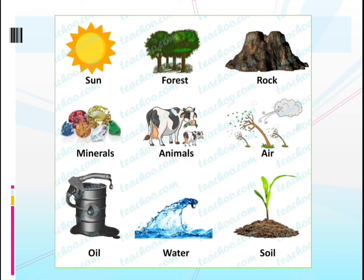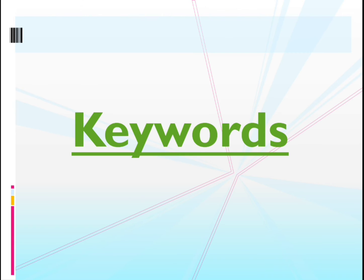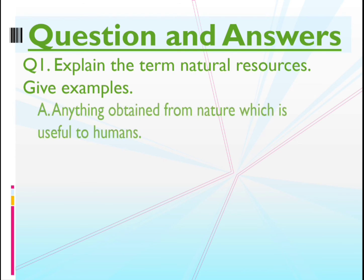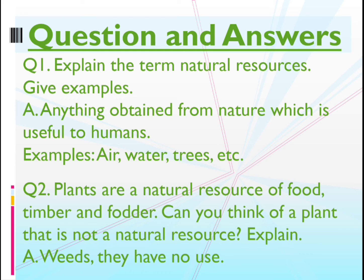People who don't get water suffer. I have given a few keywords in your daily schedule — please learn them, write them in your classwork, and underline the keywords. We have learned about natural resources and the uses of natural resources. If you find any difficult word, include it in your keywords. Question 1: Explain the term natural resources and give examples. Answer: Anything obtained from nature that is useful to humans is a natural resource. Examples: air, water, trees, plants, etc.